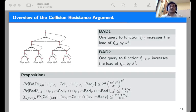We identify two bad events. The first one happens when a query to a function increases the load of that function by k^l for some suitably chosen k. Here l is the height of the tree. The second one happens when a query to a lower level function, say f_{j-t,b'}, increases the load of a function f_{j,b} by k^l. Here the function j-t,b' is in the subtree of j,b.